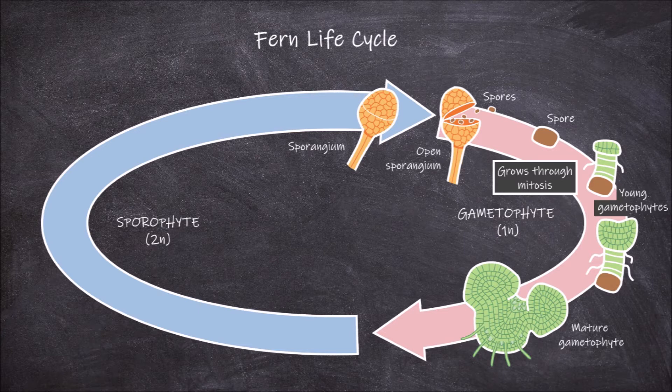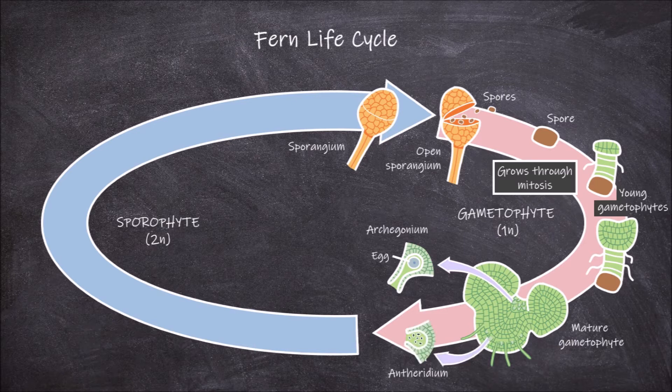Mature gametophytes are hermaphroditic — they have both sex organs. The gametophytes have female sex organs called archegonium, which contain the female gametes, the eggs. They also have male sex organs called antheridium, which contain the male gametes, the sperm. In an individual gametophyte, the male and female sex organs mature at different times to reduce self-fertilization.